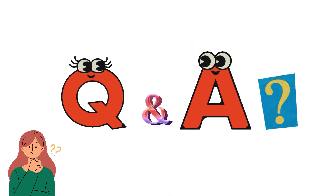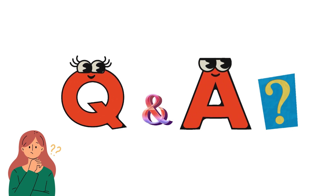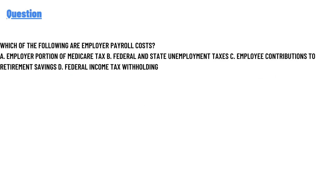Our today's question is: which of the following are employer payroll costs? Option A: employer portions of Medicare tax. Option B: federal and state unemployment taxes. Option C: employee contribution to retirement savings. Option D: federal income tax withholding.